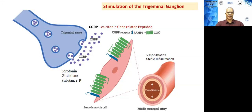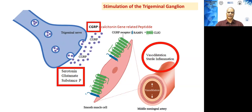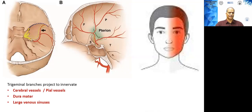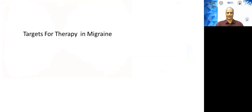At the trigeminal nerve ending, various neurotransmitters are released — serotonin, glutamate, substance P, and most importantly, calcitonin gene-related peptide (CGRP). Each has its own receptors, and the net downstream effect is vasodilatation and sterile inflammation. Since the trigeminal nerve branches intracranially to innervate cerebral vessels, pial vessels, dura, and large sinuses, this results in severe headache on one side of the head — the classical headache of migraine.